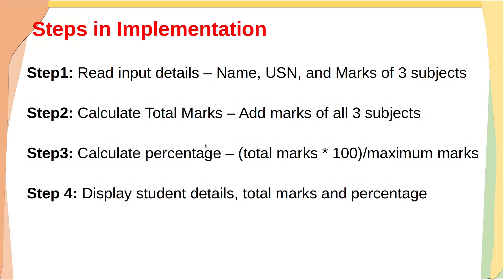This can be easily implemented in four simple steps. In step one, we read input details like name, USN, and marks of three subjects. In step two, we calculate total marks by adding marks of all three subjects. In step three, we calculate percentage using the formula: total marks times 100 divided by maximum marks — with 100 per subject, that's 300 total. In step four, we display the student details, total marks, and percentage.